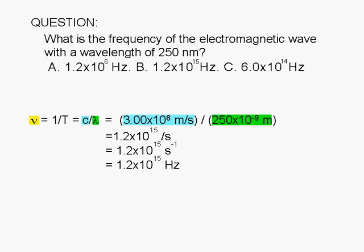Punching these numbers into a calculator, we find that the frequency is 1.2 times 10 to the 15th cycles per second. The unit is usually written as seconds raised to the negative 1 power, or as hertz.